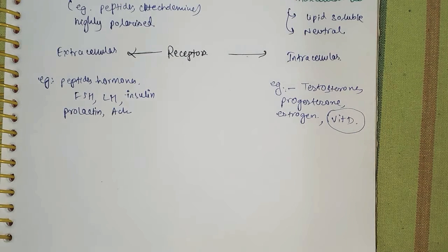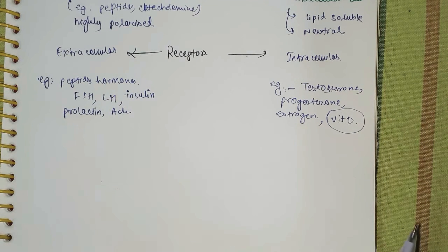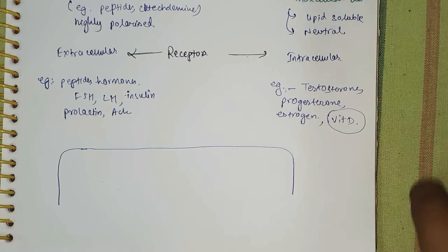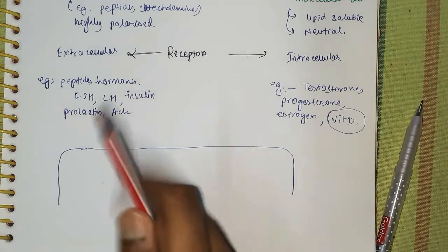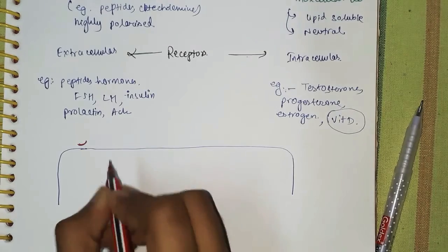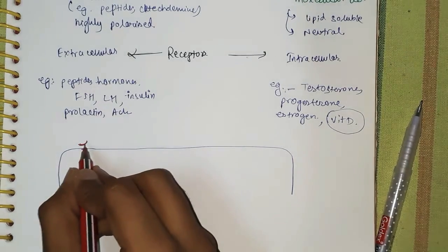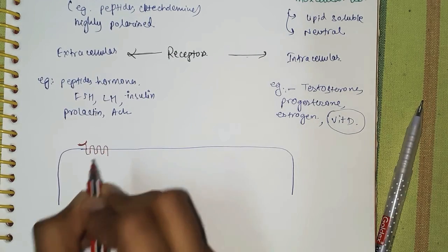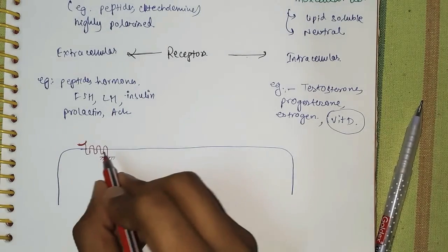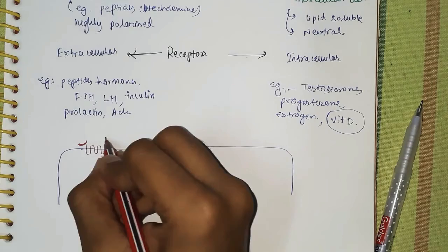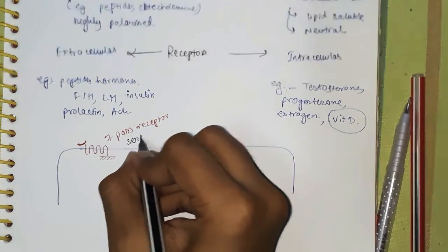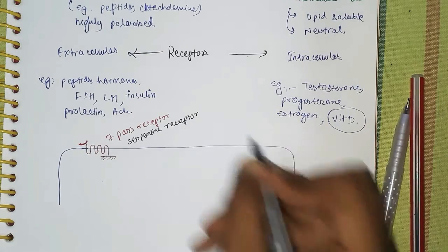Receptors are basically of three types. The first type is the extracellular receptor. This receptor has a ligand binding domain and it passes through the cell membrane seven times, giving it an intracellular effector domain inside the cell. Since this receptor passes seven times, it is also known as a seven-pass receptor, and it is also known as a serpentine receptor because it looks like a snake.